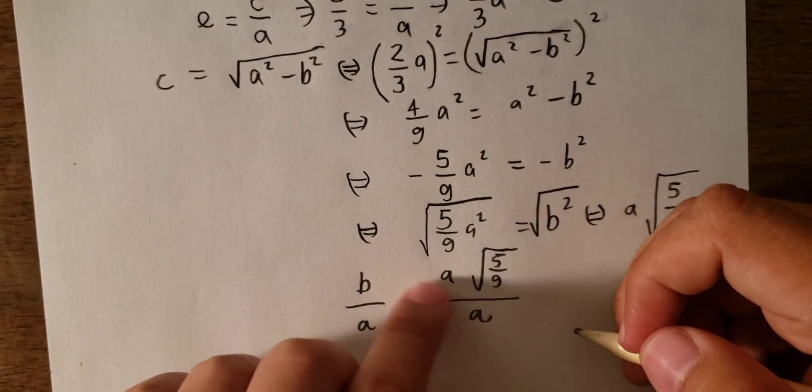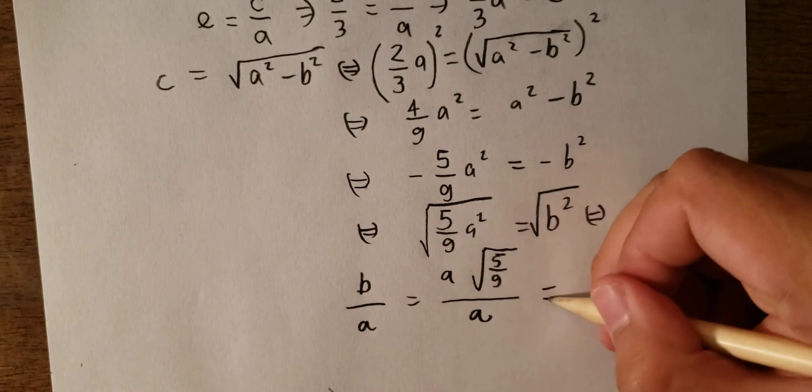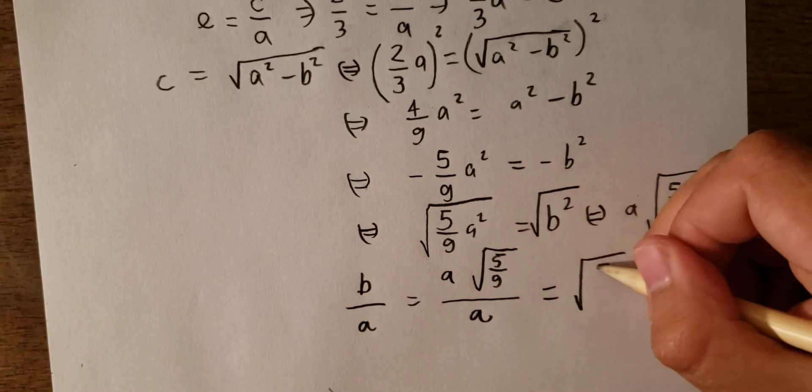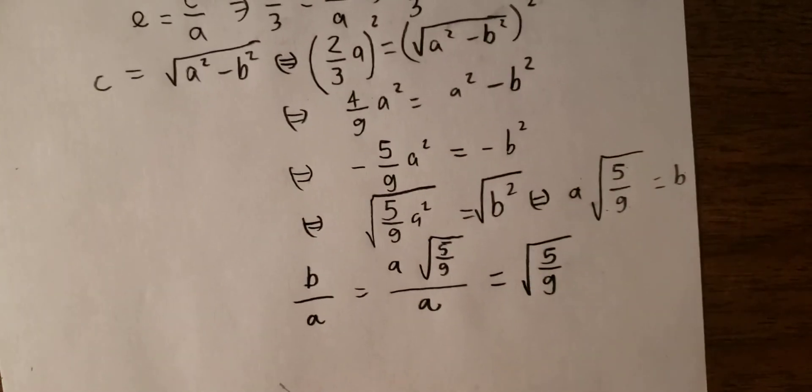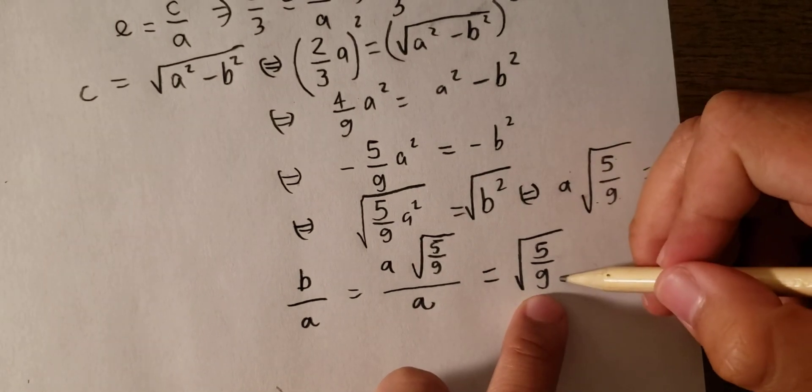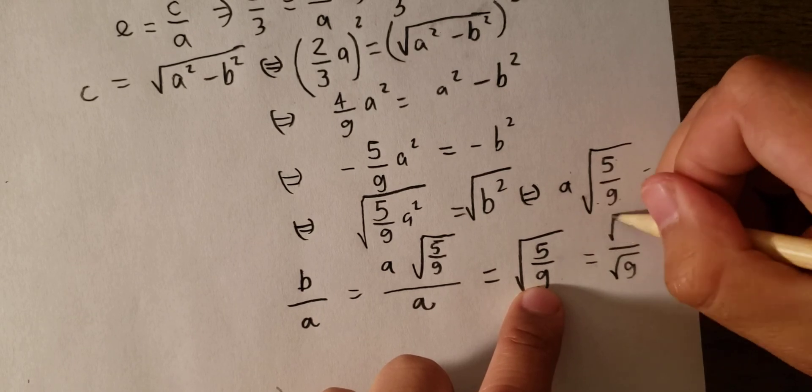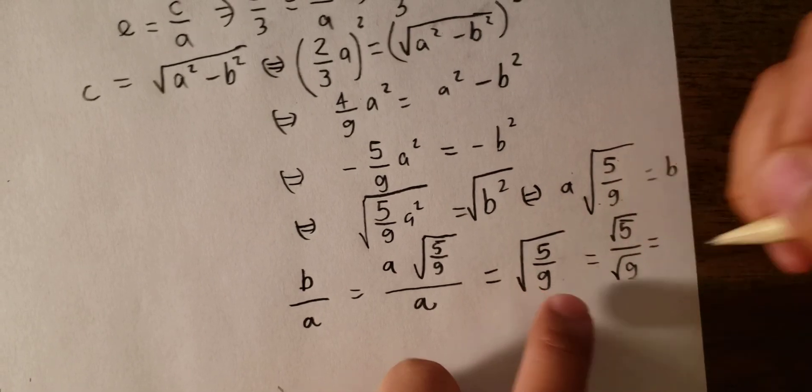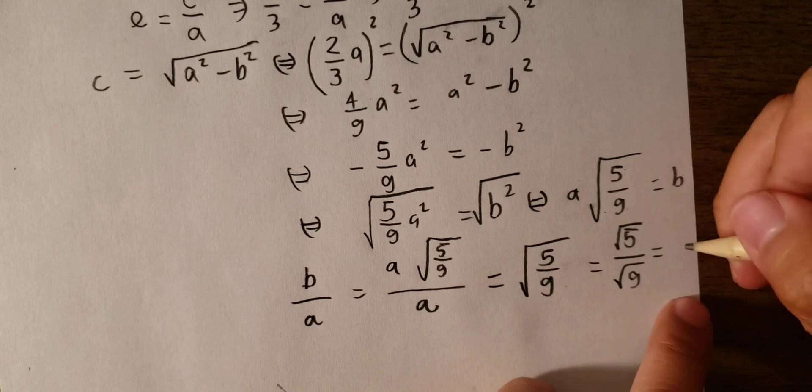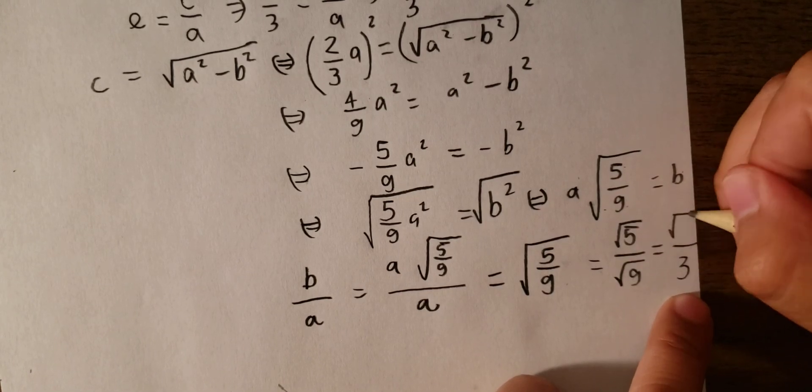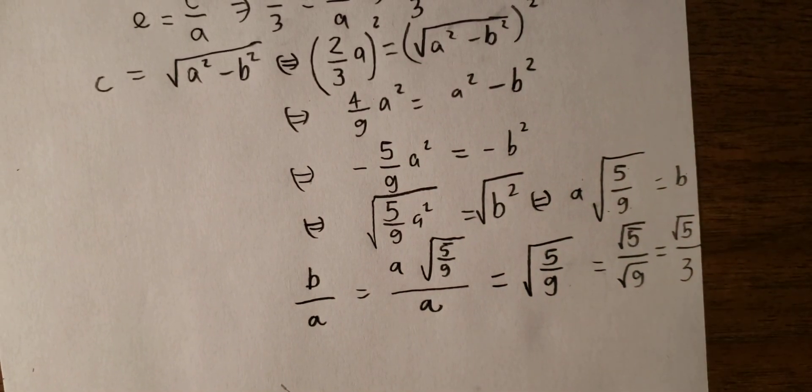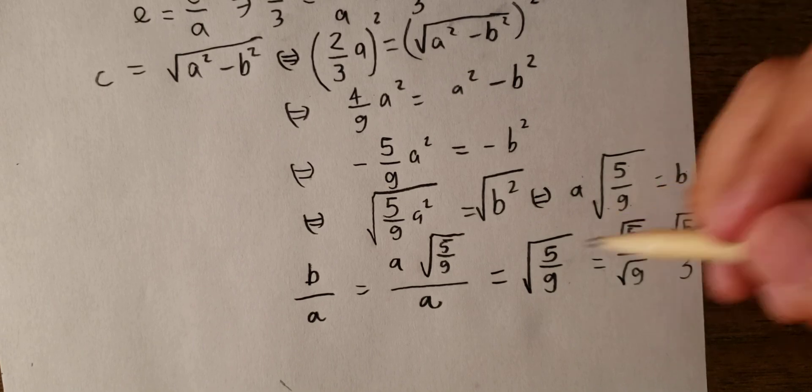So a divided by a, you eliminate, and you get about the square root 5 over 9. In here, in the number 9, we put about square root of 9 and square root of 5. Square root of 9 is about 3 and we keep about square root 5. So this is the answer for the question.